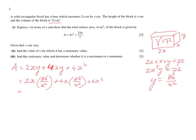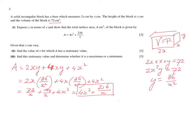Now working out those brackets: 2x times 36 over x squared gives 72x over x squared, which simplifies to 72 over x. And 4x times 36 over x squared gives 144x over x squared, which is 144 over x. Adding 4x squared, and combining the like terms: 4x squared plus 72 over x plus 144 over x, gives 4x squared plus 216 over x. That matches the required formula, so we have shown it is correct.